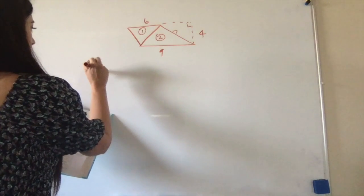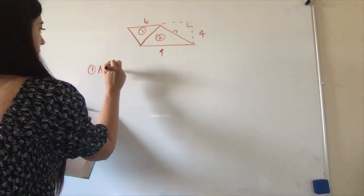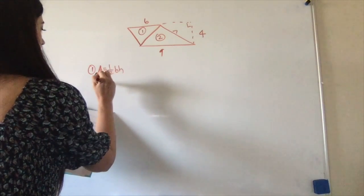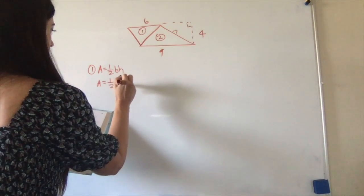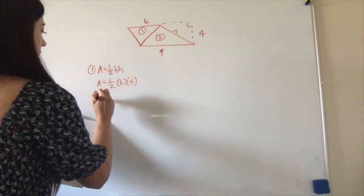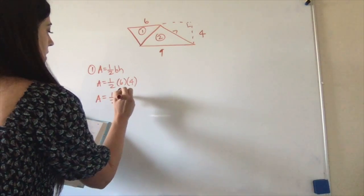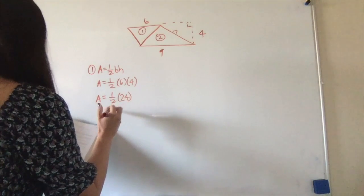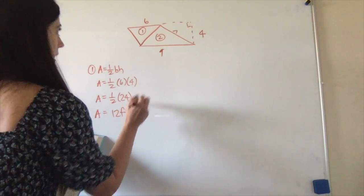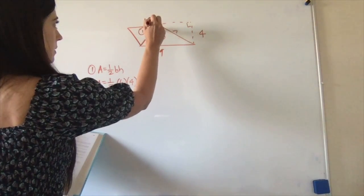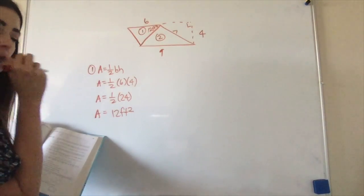So for number 1, area equals one-half base times height. Area equals one-half. My base is 6. My height is 4. One-half of 24 gives me an area of 12 feet squared. All right, that's for the first one.